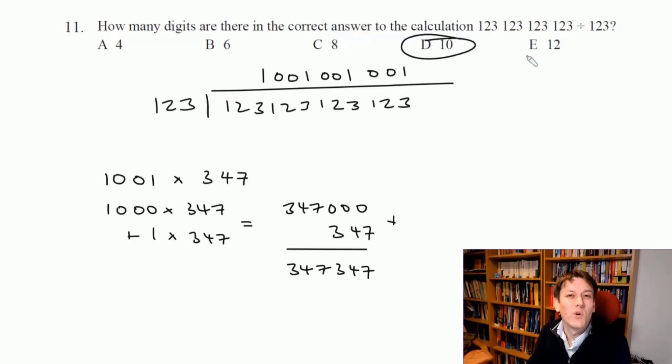You could also just say what size is this roughly? When I do this divided by 123, you could say I'm just going to get like a one here and then some other digits.